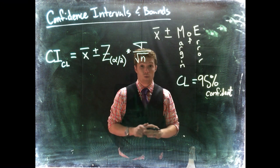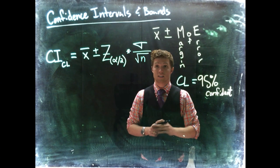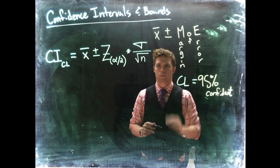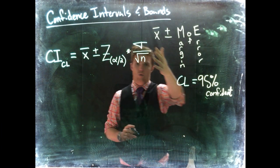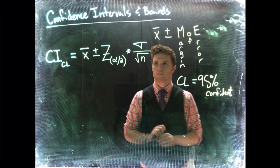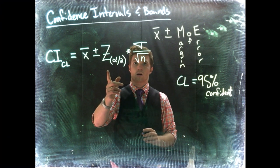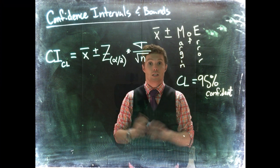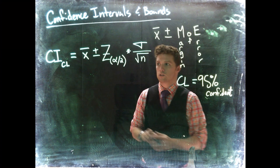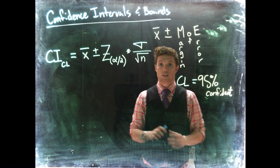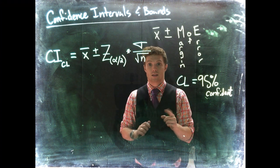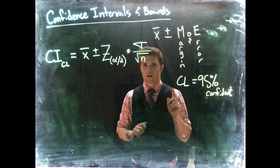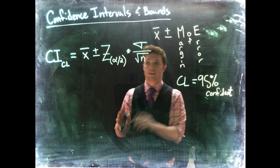We can do this either sigma divided by the square root of n. So if we happen to know what the population standard deviation is, it's possible that we do. This would be the format for our calculation where we'd use the z score and then we'd use the standard deviation. A lot of times we don't know what the population parameters are.